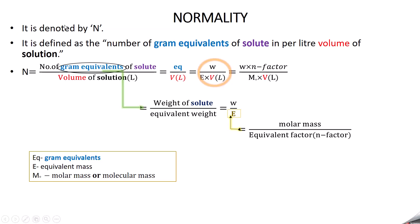Normality is usually denoted by the capital letter N. It is a very important term used in volumetric analysis. It is defined as the number of gram equivalents of solute per liter volume of the solution.